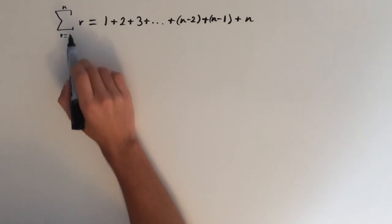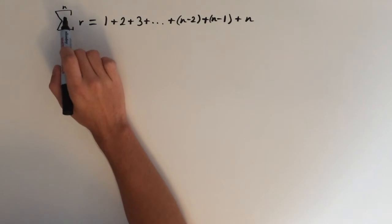On the left hand side here, we've got the sigma notation. This represents the sum of the series, where every term is r, starting at the first term, r equals 1, going all the way up to the nth term.